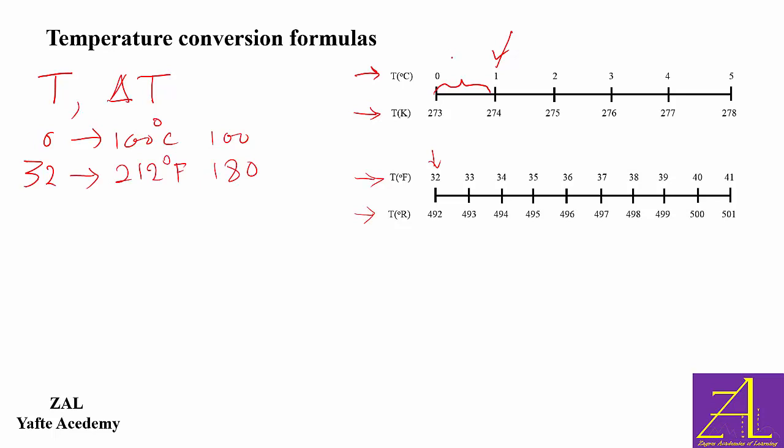So delta T, which is a degree in Celsius, is 1.8 times delta T in Fahrenheit, or 9 over 5. We can write delta degrees C equals 1.8 delta degrees F.